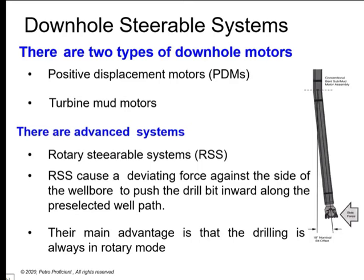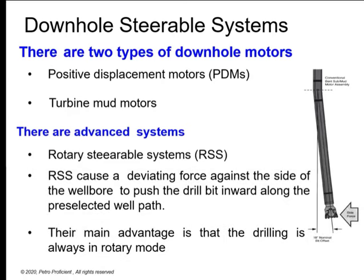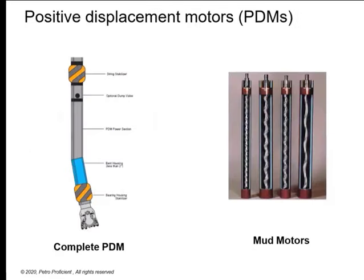Other important types of systems are the positive displacement motor, turbine motor, and rotary steerable systems (RSS). RSS applies a deviating force against the side of the wellbore to push the bit along a preset path, causing the bit to move in a pre-determined direction — a very advanced form of directional drilling. You can actually change the direction of the well while drilling by sending a command called a downlink. The most common are positive displacement motors, which have a stabilizer, dump valve, power section, bent housing, bearing housing, and bit. The power section can have different configurations depending on torque and power requirements.